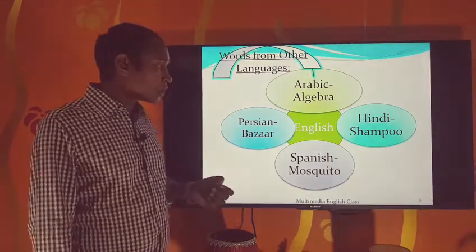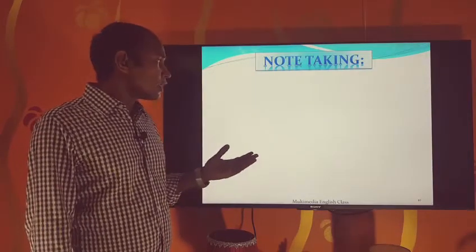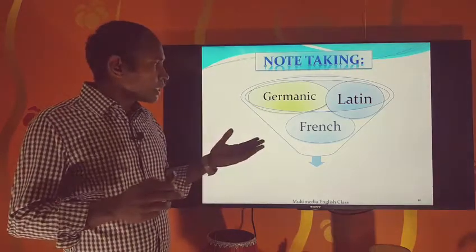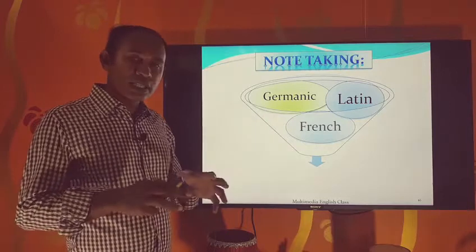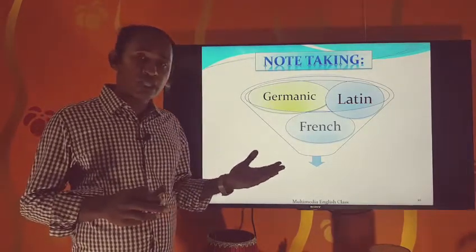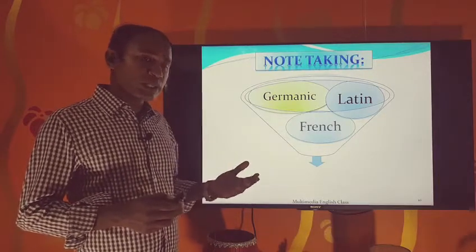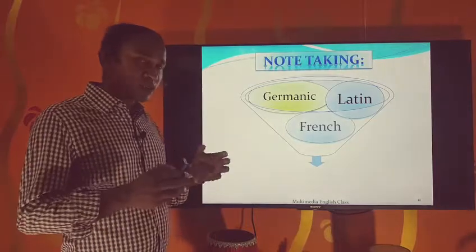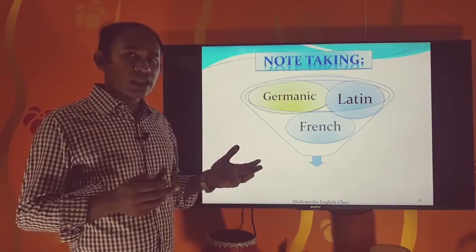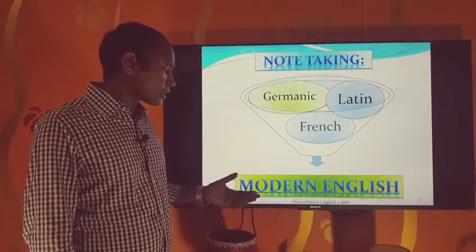English is not a unique language — it is the combination or mingling of different kinds of words from different kinds of languages. Especially Germanic, Latin, and French — these three languages are the most important sources. Latin is a dead language, but it exists in English because around 60% of English words have come from Latin. So Latin is extremely important to the English language.